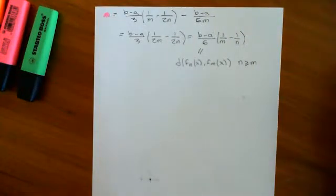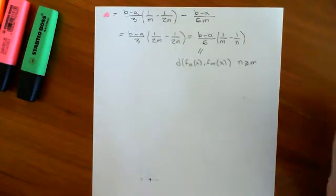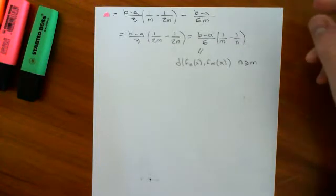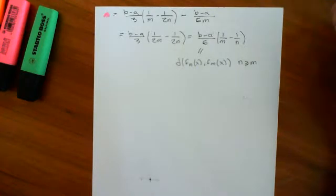Welcome back to part 4 of this video in which we are proving that the metric space C(A,B), which is the set of continuous functions on the interval A,B, along with the integral metric defined on that set, is not a complete metric space.